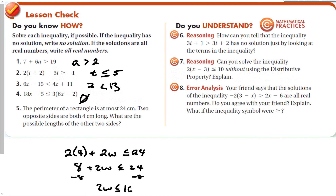How can you tell that an inequality has no solution just by looking at it? If it says 'greater than' with the same set of variables on both sides — since the 3t will cancel out — 1 is not greater than 2, so there's no solution.